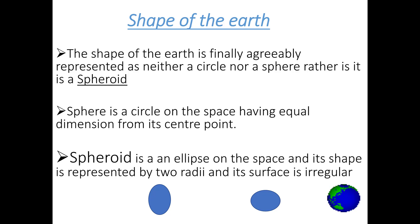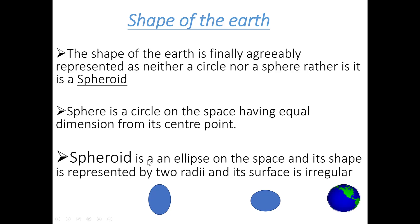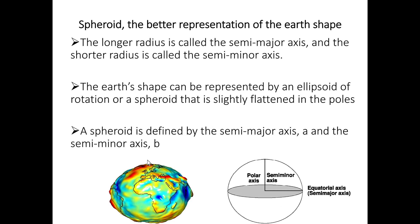Finally, we know that the shape of the Earth is actually a spheroid — it represents a circle-like sphere. A spheroid means the angular shape is a spheroid. A spheroid is a circle of our space having equal dimensions. A spheroid can be defined from the center point. A spheroid is an ellipse. The elliptic shape is represented by two radii and its surface is irregular. A spheroid is a better representation of the shape of the Earth.